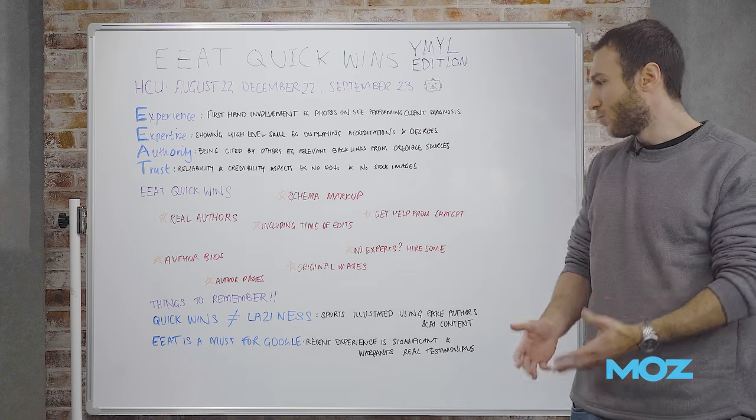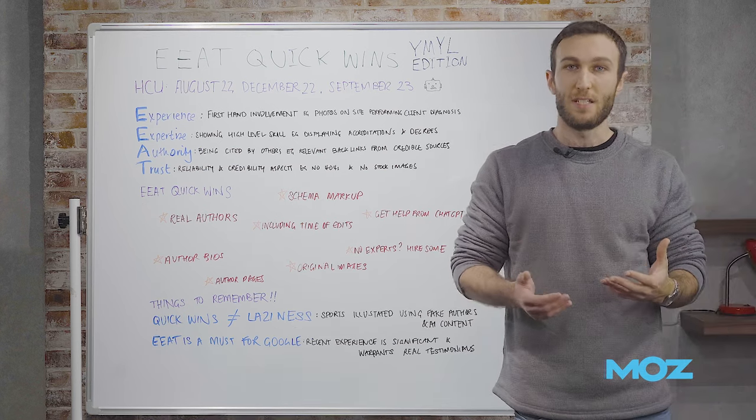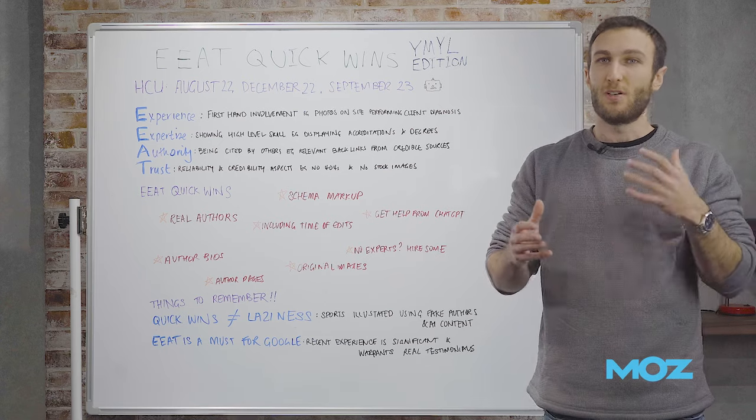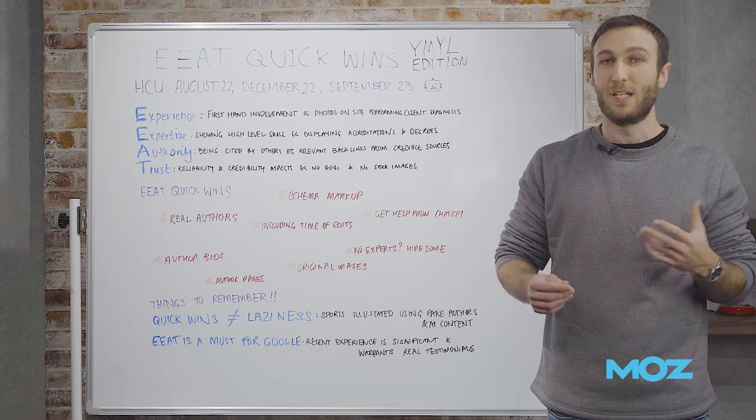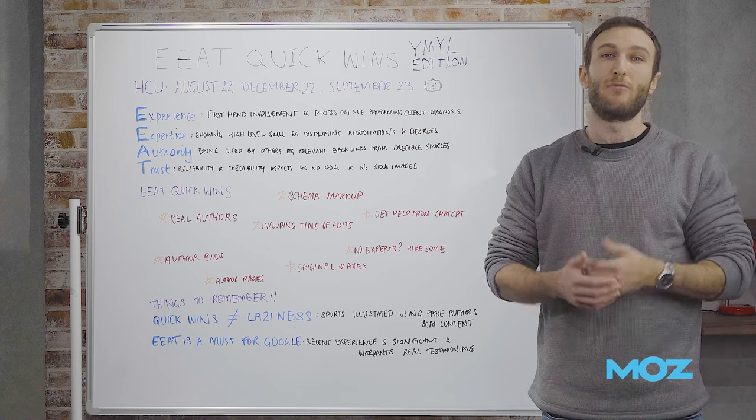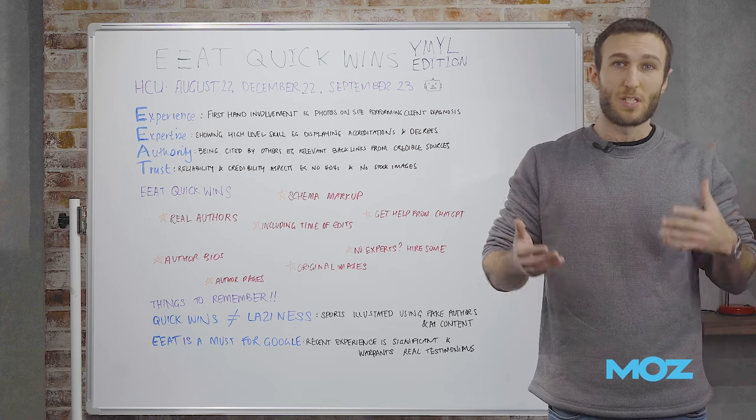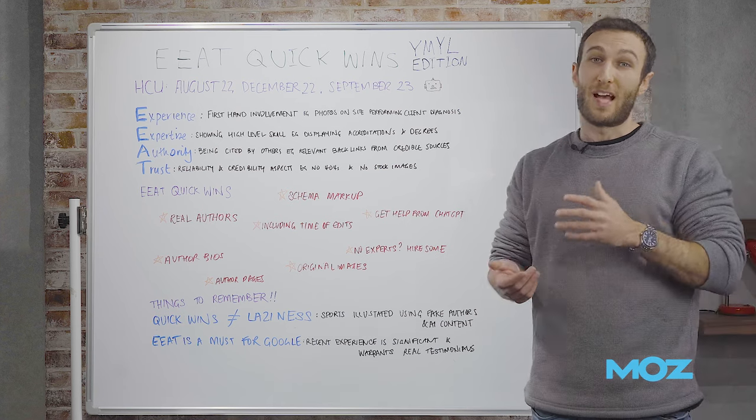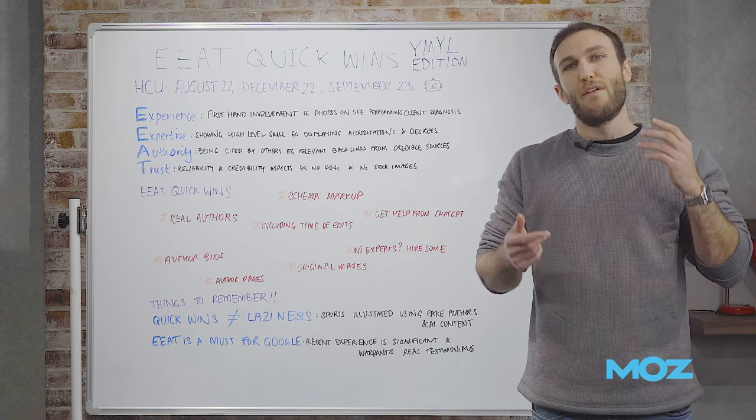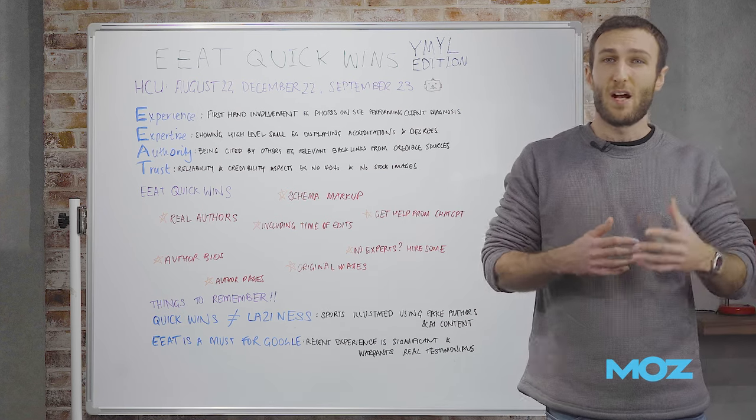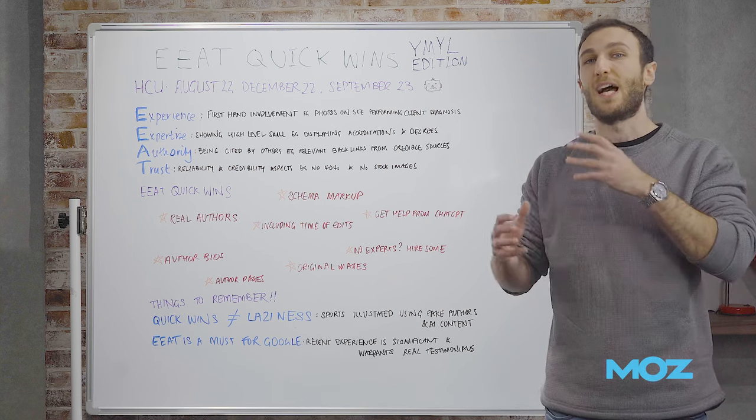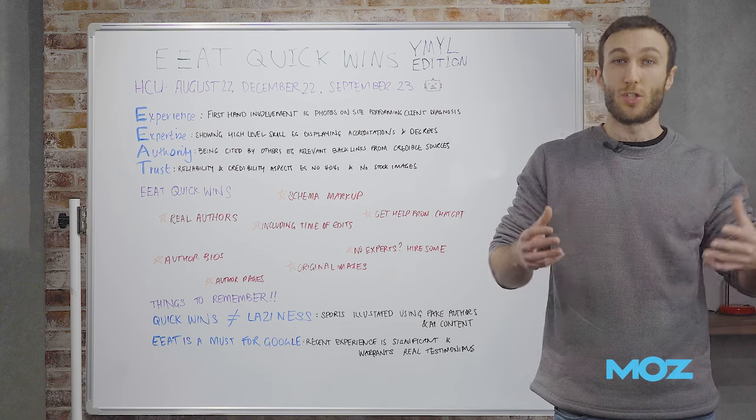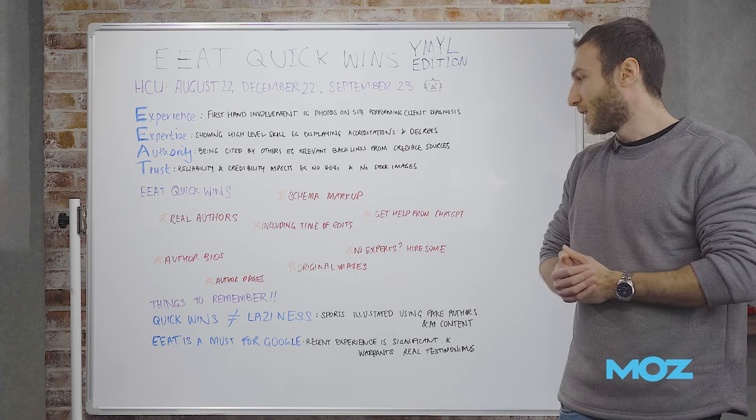Those are some EEAT quick wins, but there are things you need to remember. First, quick wins does not equal laziness. All of these tips require thought - it's not something you can do in a lazy way. There have been real-world implications where this has gone wrong. One example is Sports Illustrated, which recently used fake authors and AI-generated content without much human due diligence or human additions. That's very important to keep in mind.